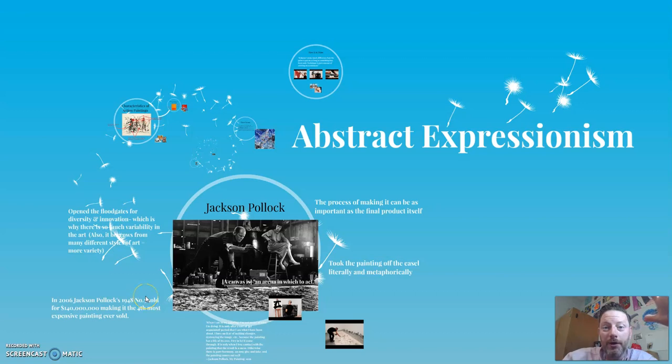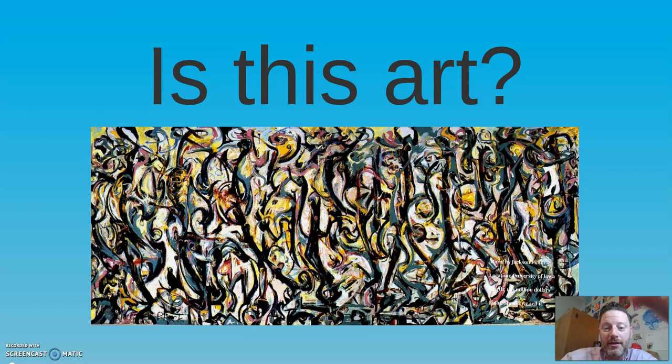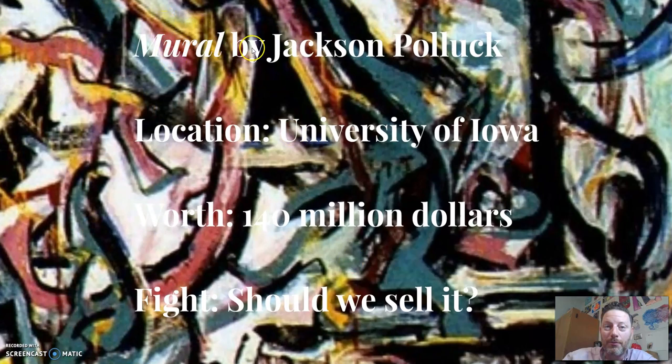We're going to do a quick version of the Abstract Expressionism lecture, if you missed it in class. The question is, is this art? This is about the size of the wall of the classroom — it's pretty large. A lot of people think no. I was one of those people until I had this assignment and started doing this and saw that, yeah, this is art. This is actually called Mural by Jackson Pollock. It's in the University of Iowa, and it's worth $140 million.